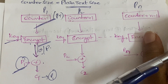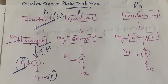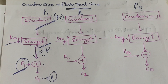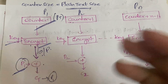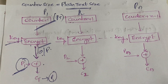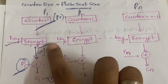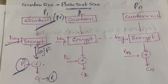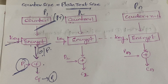Each round the counter is incremented by 1. Starting from an initial counter value, the next round is counter+1, then counter+2, and so on — up to counter+(n−1) for the nth round. Each time, the counter is encrypted with the key and XORed with the corresponding plain text block to get the cipher text. This is the key thing to remember about counter mode.